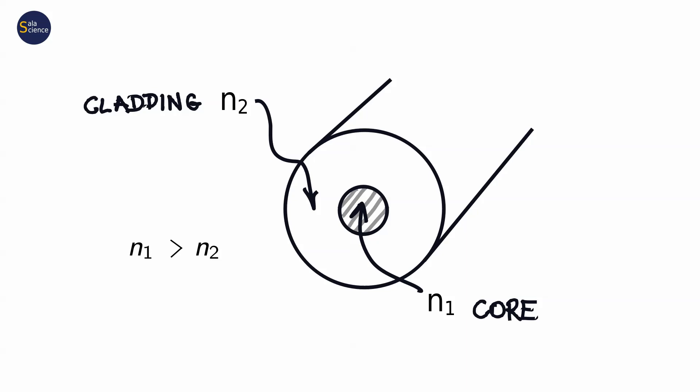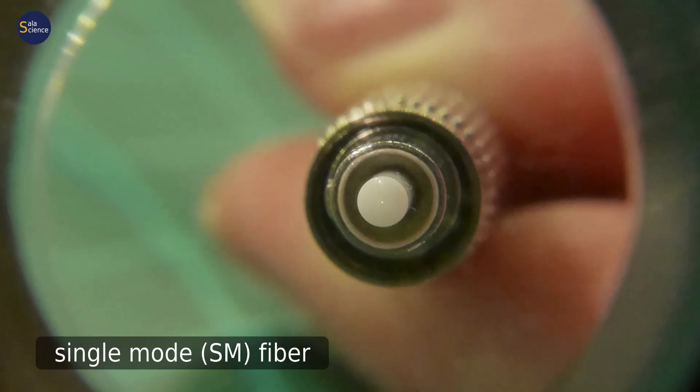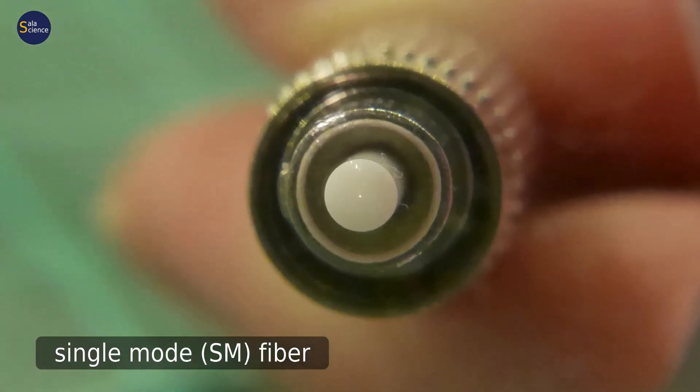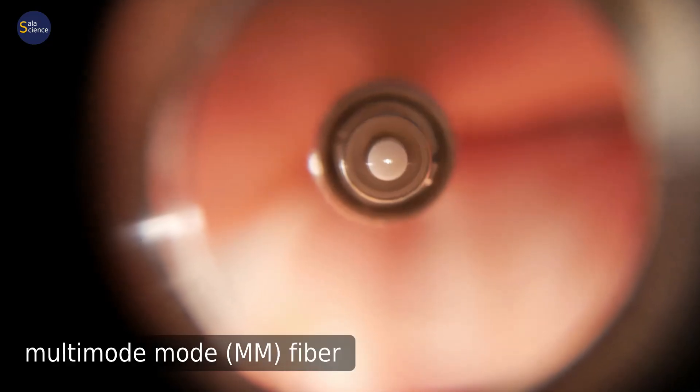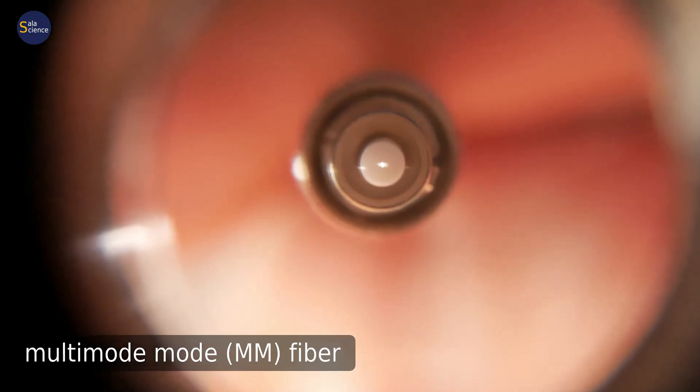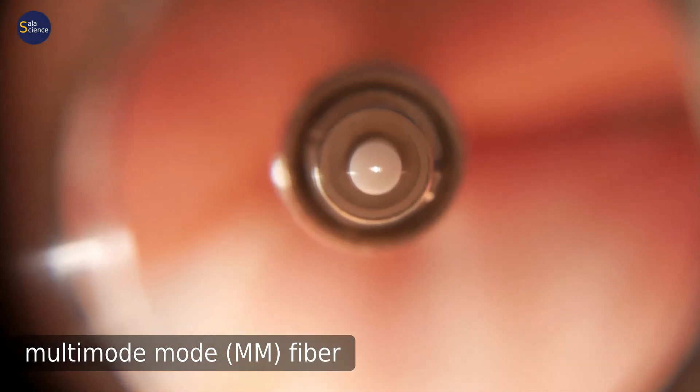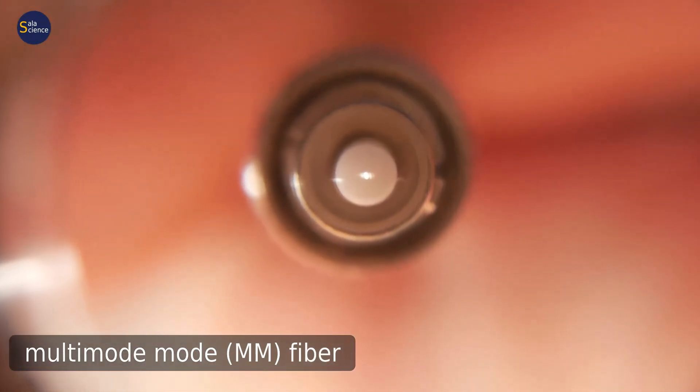Size of the core is typically of the order of micrometers, from a few micrometers for single-mode fibers to tens of micrometers in multimode fibers. Typical size of the whole structure is 125 micrometers, up to hundreds of micrometers for some special applications.